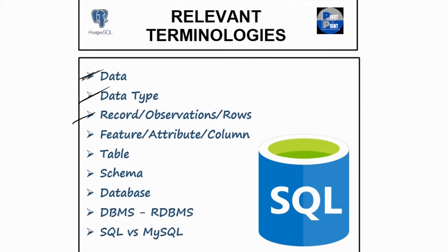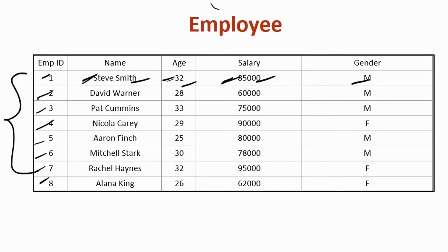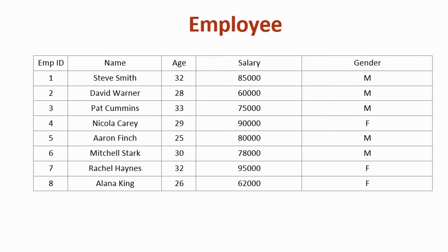Moving on to the third term, which is record, observations, or rows. Over here on the screen, each value inside this employee ID column belongs to one particular row, and each individual row has five data inside it. If you are someone who works on Excel spreadsheets most of the time, you will refer to them as rows. However, when you are working on SQL or even with the Pandas library in Python, these will most often be referred to as observations or records.